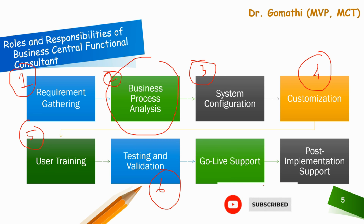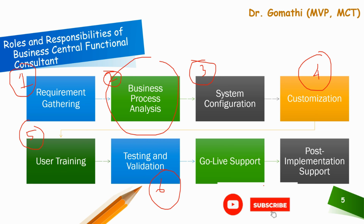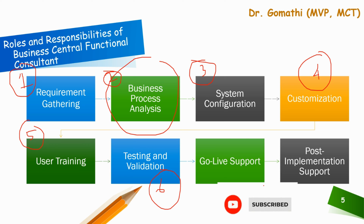The sixth phase is testing and validation. Before go-live, you conduct extensive testing to validate the inventory processes in Business Central. You verify that stock transfers between locations are seamless, sales orders deduct stock correctly, and the inventory dashboard displays accurate real-time data. Any issues discovered during testing are resolved to ensure a smooth transition.